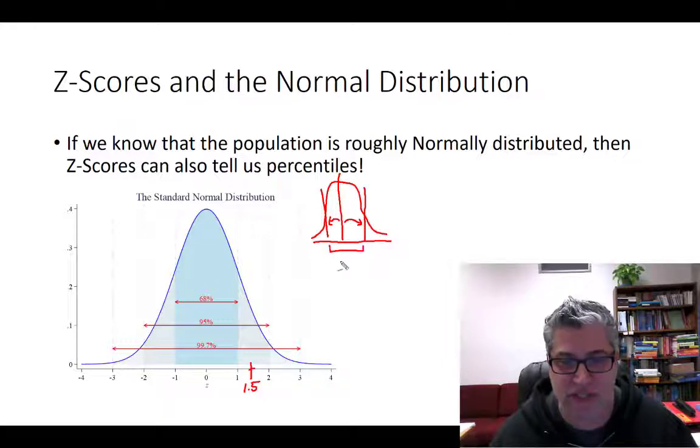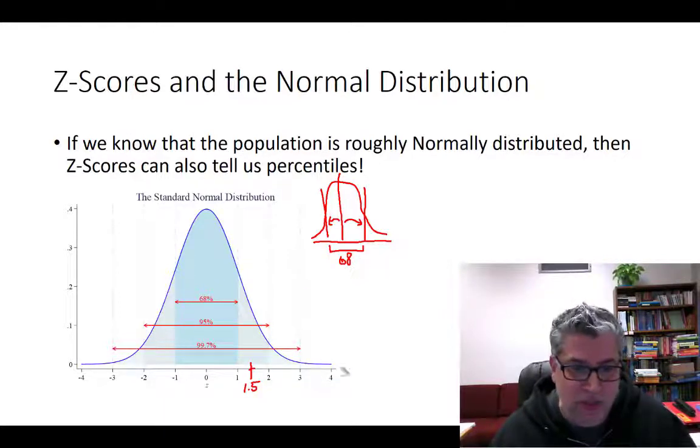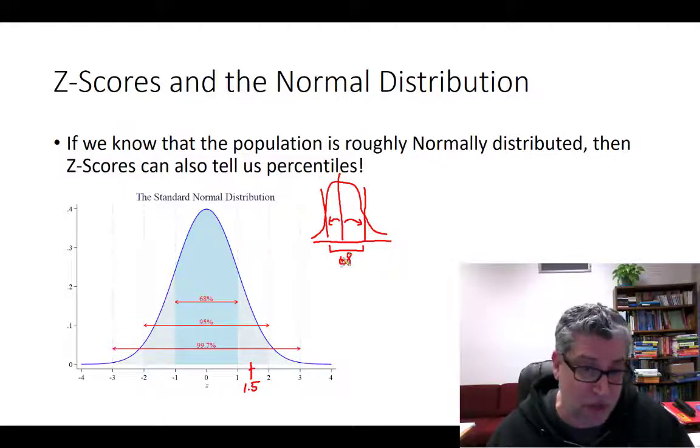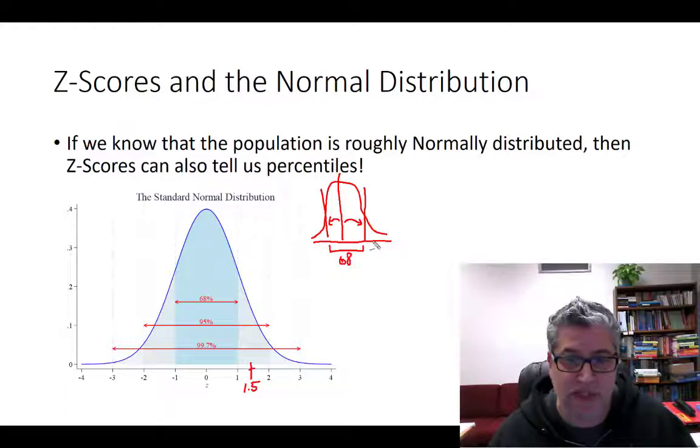We've accounted for 68% of observations, which means that 32% of observations are unaccounted for. And since the normal distribution is symmetric, right? It's symmetric around zero. Then the remaining 32% that's left over from the 68, those have got to be split up between the left tail and the right tail.